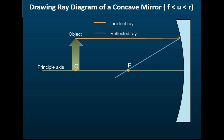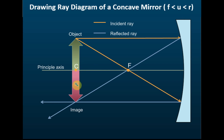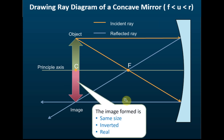This is the case where the object is at the centre of curvature. Using rule two — parallel to the principal axis reflected through the principal focus — and rule three — through principal focus reflected parallel — we find that the image is exactly below the object. The distance of the object equals the distance of the image. The characteristics are: same size, inverted, and real.